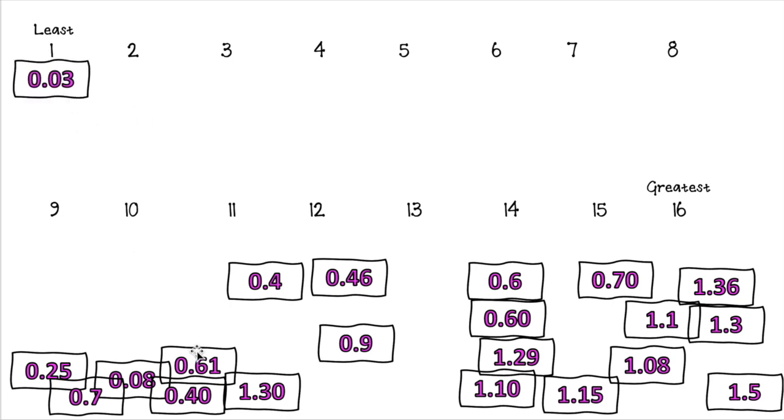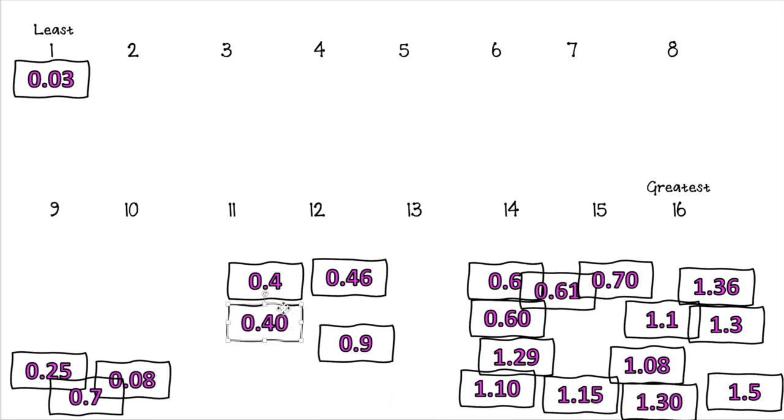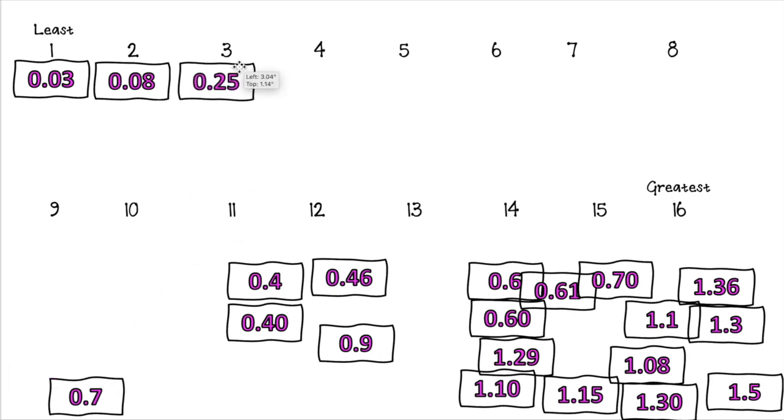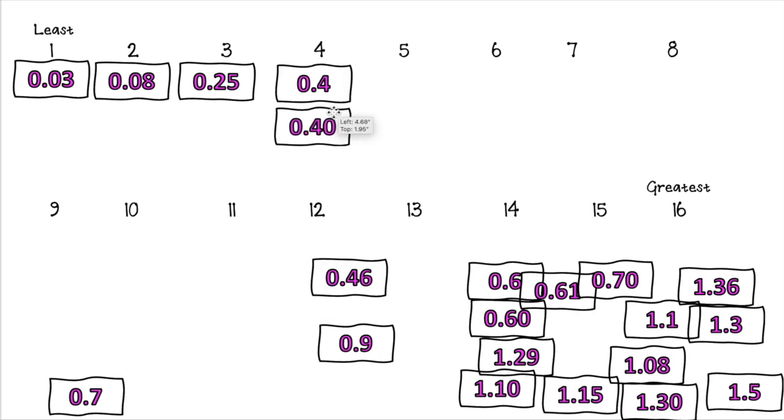I found a small number. I have 3 hundredths, so that's pretty small. Then I have 0.61, I'll put it here. 1.30. I found another two that are equivalent. 0.4 is equivalent to 40 hundredths. 4 tenths is equivalent to 40 hundredths. So I have 8 hundredths, 25 hundredths. I'm going to put this 4 tenths or 40 hundredths here.